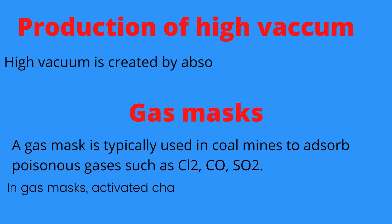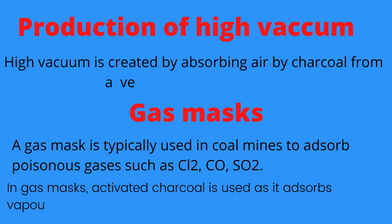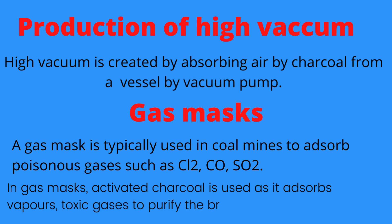Then, production of high vacuum. High vacuum is created by absorbing air by charcoal from a vessel using a vacuum pump. Then, gas mask. A gas mask is typically used in coal mines to absorb poisonous gases such as chlorine, carbon monoxide, and sulfur dioxide. In a gas mask, activated charcoal is used as it absorbs vapor and toxic gases to purify the breathing air.